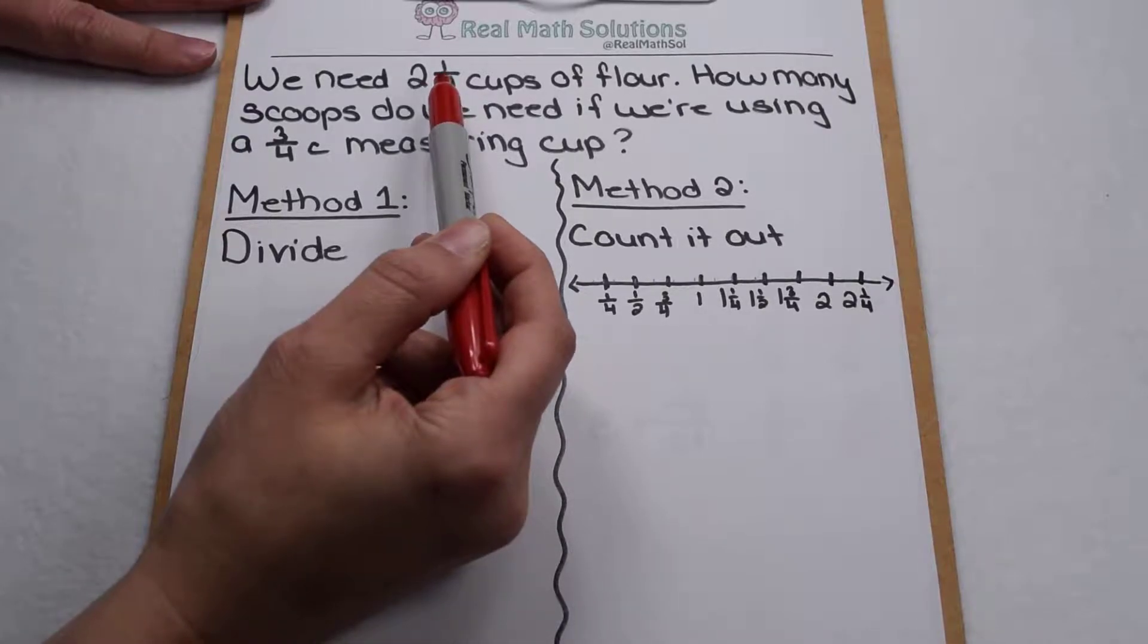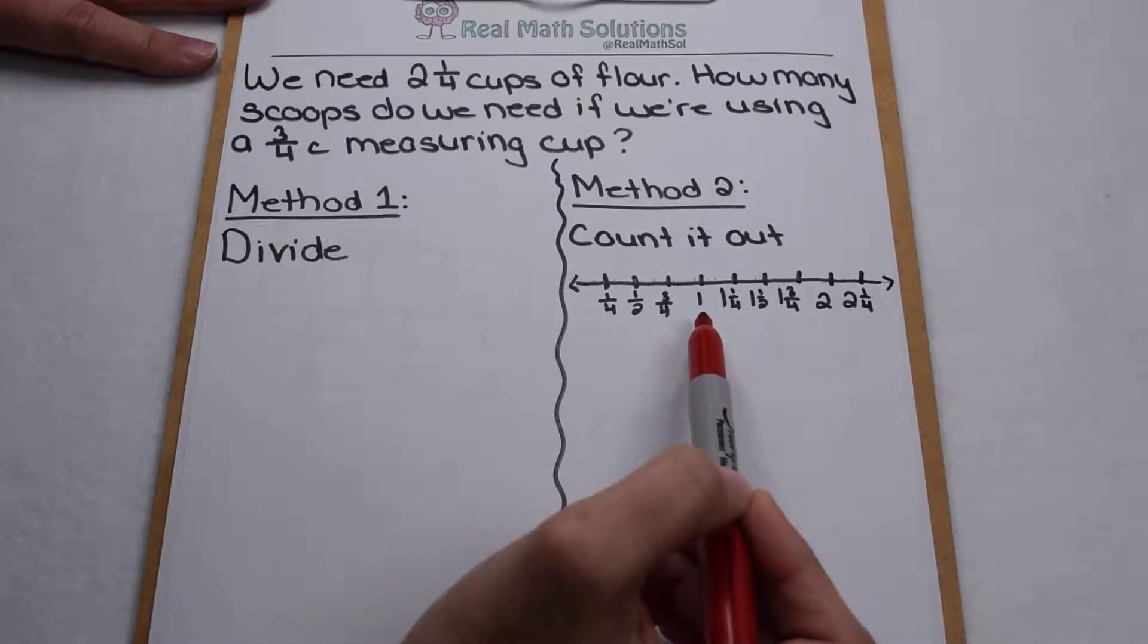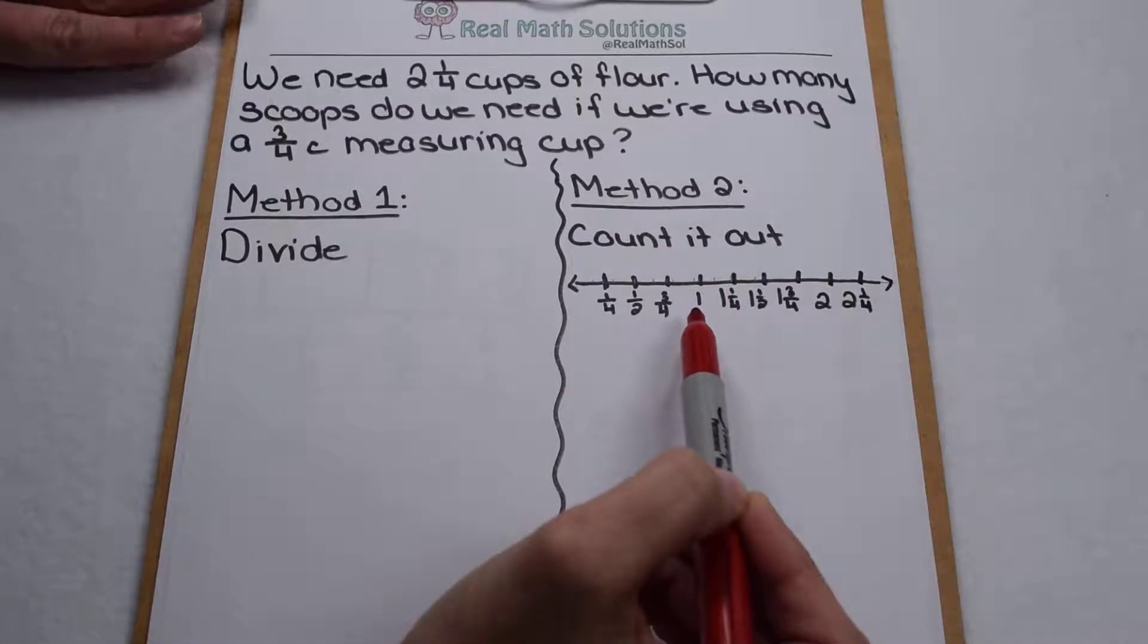Well let's look at two different ways to solve it. One way we can solve this is by dividing. The other way we can solve it is by going through and counting it out. Let's start by dividing.